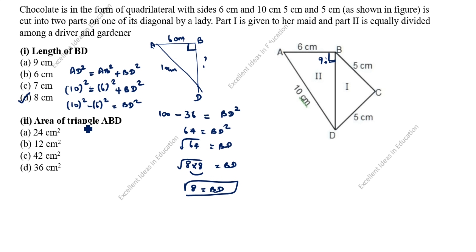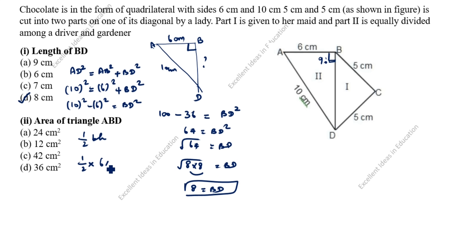The next question asks for the area of triangle ABD. You see in this drawing, ABD is the triangle we need. The area of a triangle formula is half times base times height. Base is 6, height is 8 — we just calculated 8. So: ½ × 6 × 8 = 24. So 24 square centimeters is the answer.